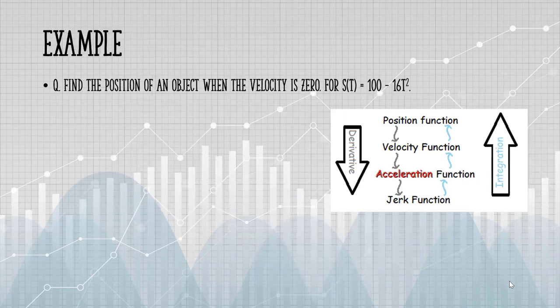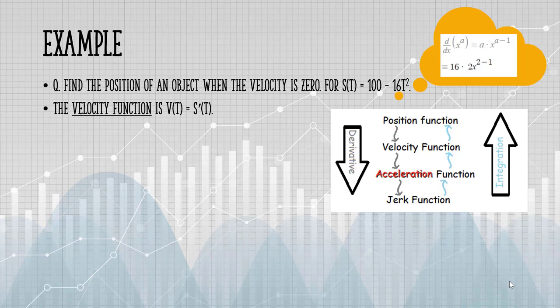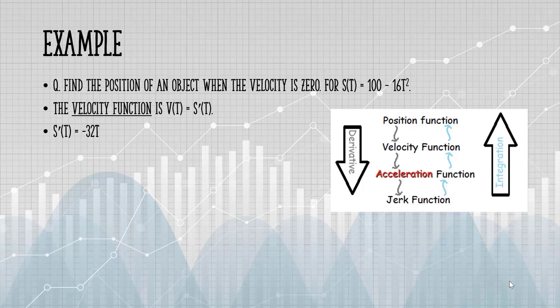We want to find the position of an object when the velocity is 0 for the function 100 minus 16t squared. So we have the position function. In order to calculate the velocity, we need to take the derivative. The derivative of a constant is 0, and the derivative of 16t squared, we can find that with the power rule. So my derivative is minus 32t. That's my velocity function.